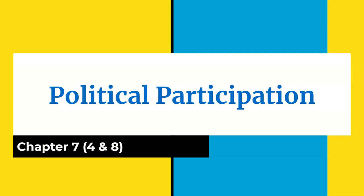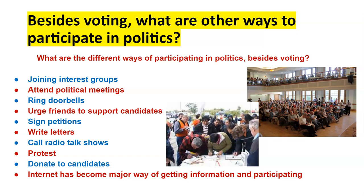We know that the most common form is voting, of course, but are there other ways that we can participate in politics? There are many ways that we can participate in politics today, including voting. In Unit 5, we'll look in even more depth about political participation — Unit 5 is all about political participation, using things like linkage institutions, the media, outside groups, the role of money, campaigns, and campaign finance.